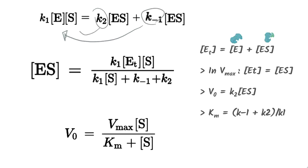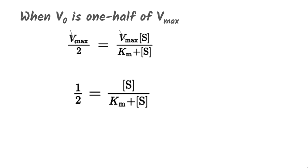Keep in mind that at maximum velocity, all the enzyme is saturated, hence in this situation, the concentration of ET is equal to ES. The term K-1 plus K2 divided by K1 is defined as the Michaelis constant, Km. Then with some factorization mambo-jambo, we get the famous Michaelis-Menten equation. Under these conditions, Km is equivalent to the substrate concentration at which V0 is one-half of Vmax.